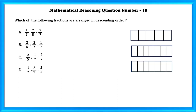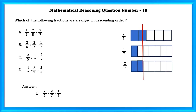Question No. 18: Which of the following fractions are arranged in descending order? As we can see, this is the fraction 2/5, this represents 1/7, and this represents 2/7. Since 2/5 is the biggest, the descending order should be 2/5, then 2/7, then 1/7. This leads us to option B.